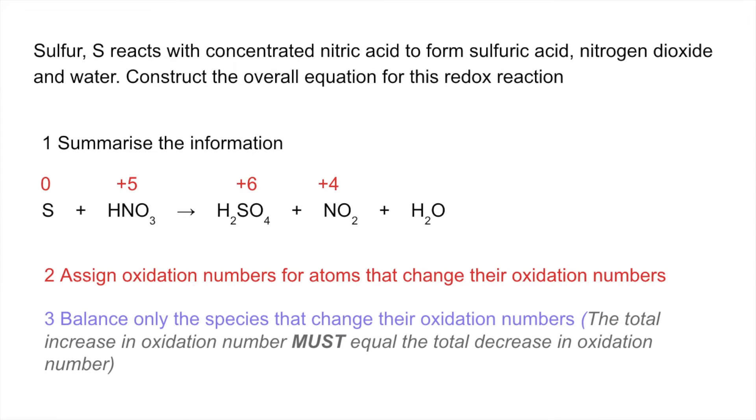So step three is balance only those species that change their oxidation number. Remember that comes from that rule, the total increase must equal the total decrease. So you can see the oxidation process, the sulphur gets oxidised from zero to plus six, so that must be a loss of six electrons. Those six electrons have to go somewhere, but the reduction process only involves the gain of one electron. So basically we need six nitric acids to accept those six electrons, so we're going to have to form six NO2s.